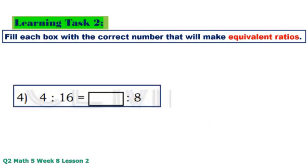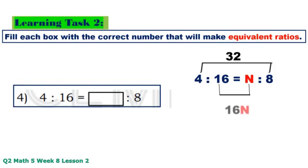Number 4: 4 times 8 equals 32, 16 times N equals 16N. 32 divided by 16 equals 2.